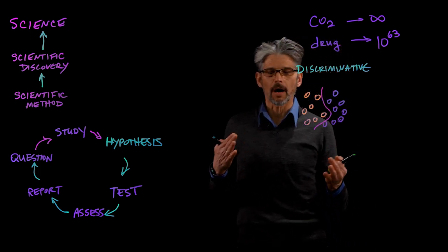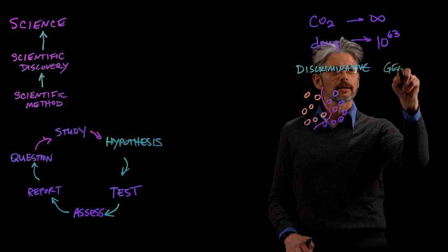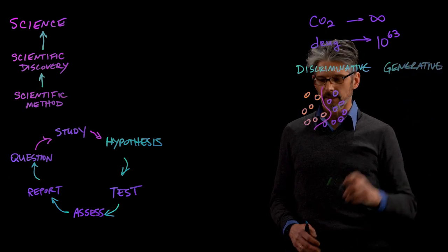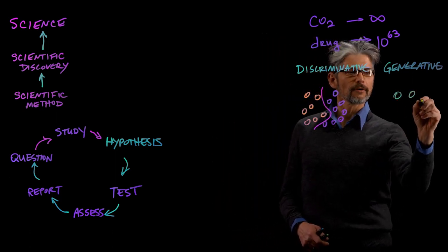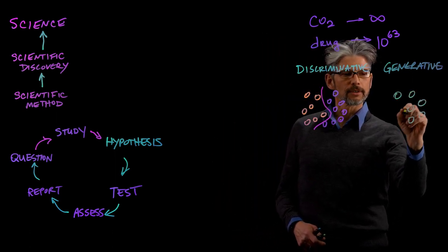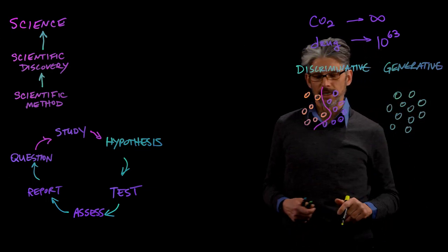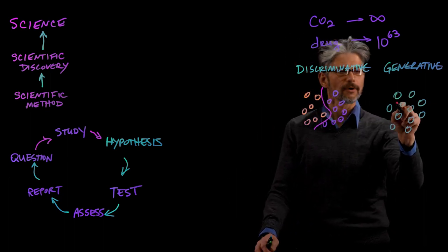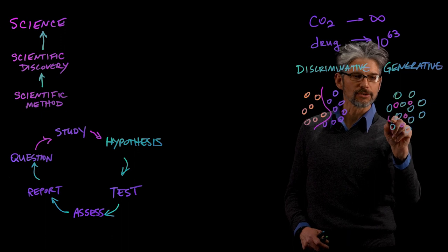Now, on the other hand, generative models work completely differently. Generative models are also given training data. However, what the generative models learn to do is to model the distribution of that training data in such a way that they can generate new instances that belong to that distribution.